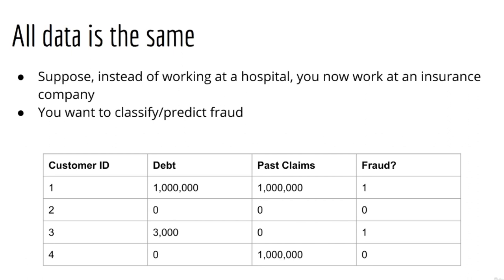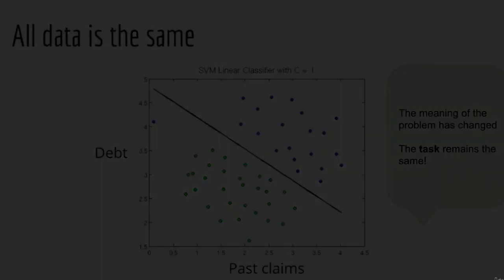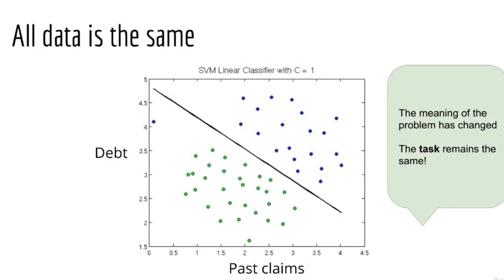One lesson that goes hand in hand with the geometrical perspective is another motto of mine. All data is the same. Let's use another example to illustrate the point. Suppose instead of working at a hospital, you now work at an insurance company. Your job is to do fraud detection, or in other words, classify instances of fraud. So again, you have two categories, fraud or not fraud. You are trying to predict whether or not a given claim is fraud. Let's say again you've collected some data points, again, with two input features. Suppose these are, number one, the amount of debt the claimant has, and number two, the total amount of past insurance claims. And again, it's the same story. Once you've collected all your data points, you're going to plot them and color them on a grid. Your job again is to separate these data points with a line or a curve.